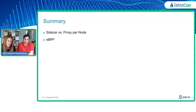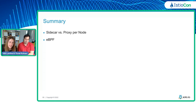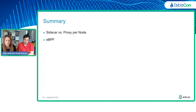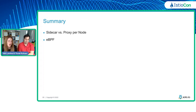We actually wanted to show you an observability demo but we'll probably post it separately since we don't have time. Solo has open-sourced a project called Bumblebee that focuses on observability with eBPF. It's kind of like Docker for eBPF — it helps you build eBPF programs and auto-generates your user-mode code. Go check it out, it's open source. Let's summarize what we talked about.